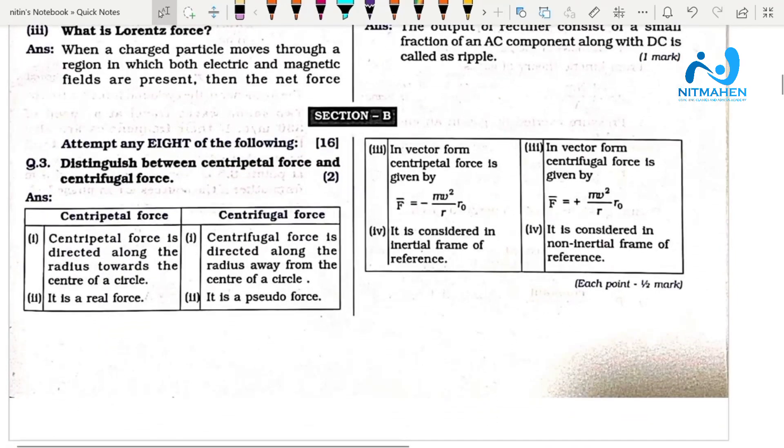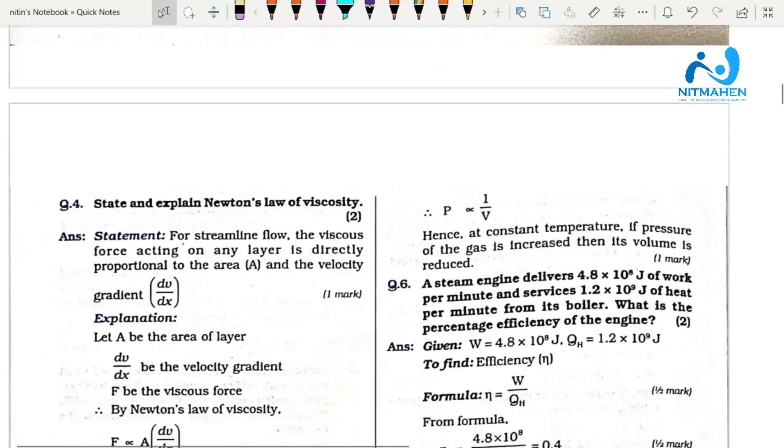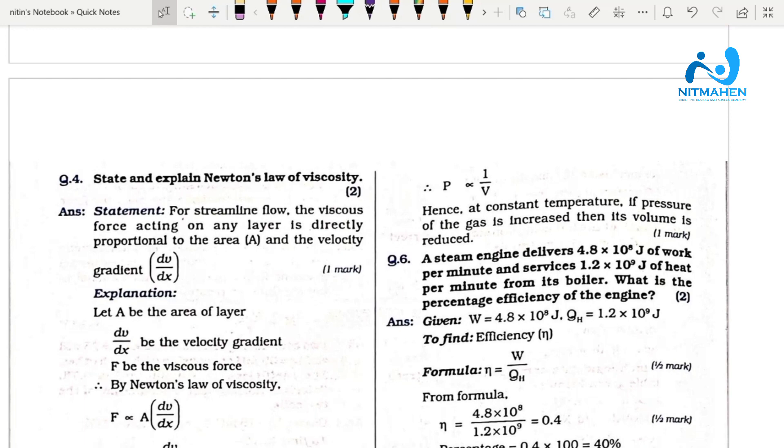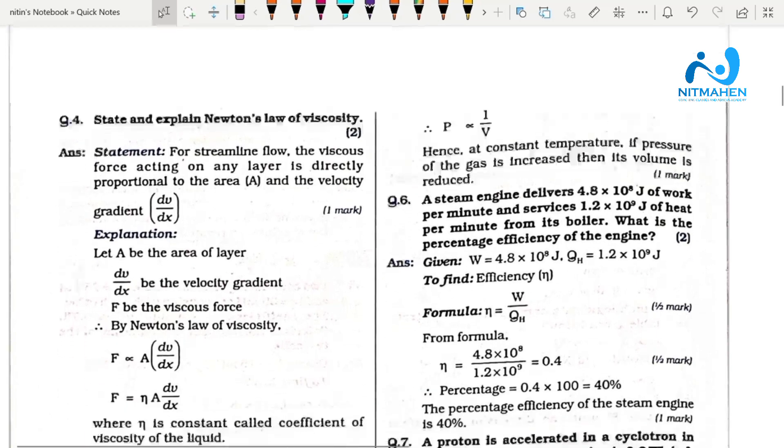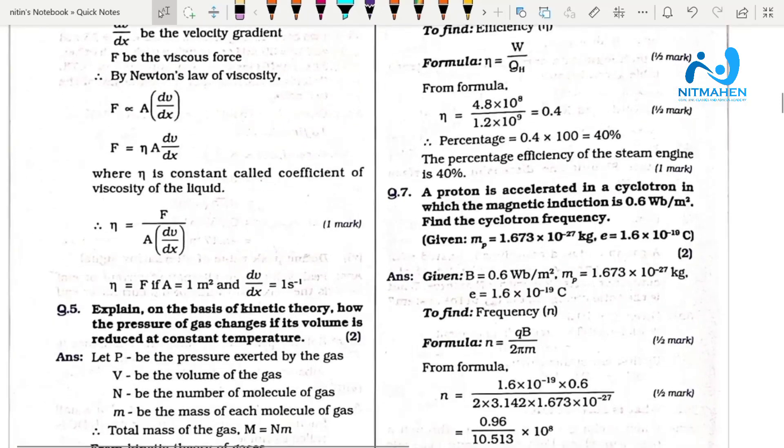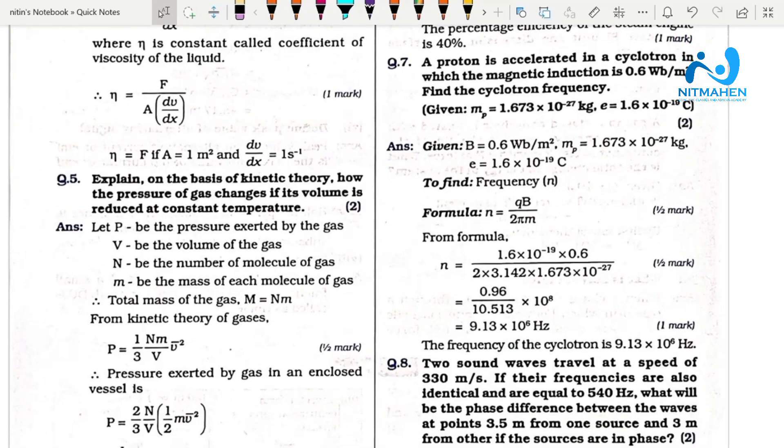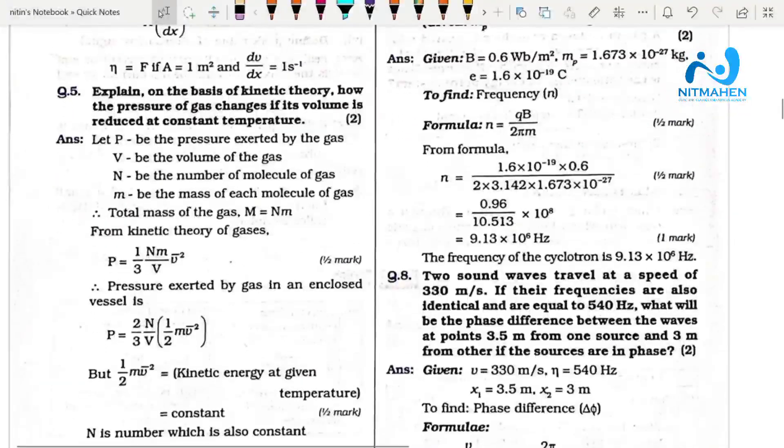Section B has centripetal and centrifugal force questions. Question 4 asks to state and explain Newton's law of viscosity - this is not a question in the board exam. The fifth question explains using the KTG chapter related topics.